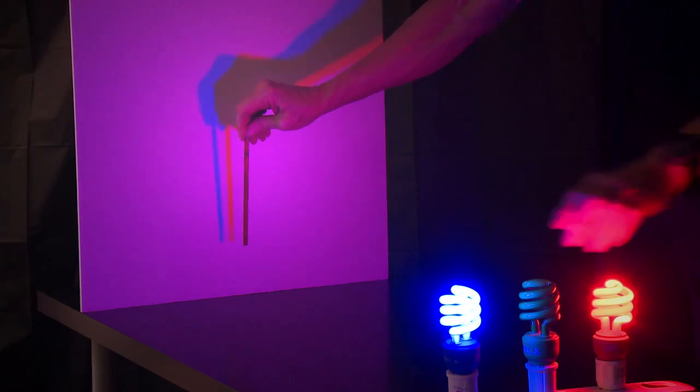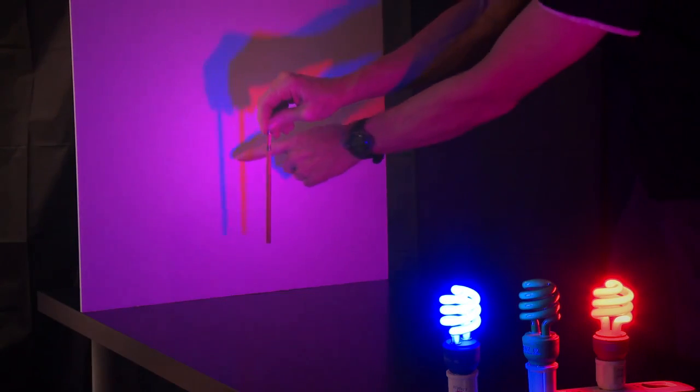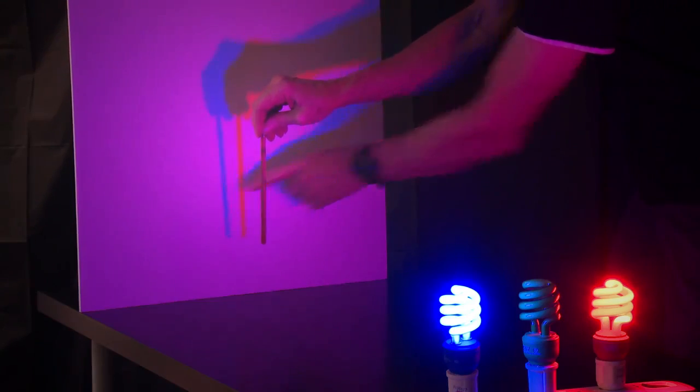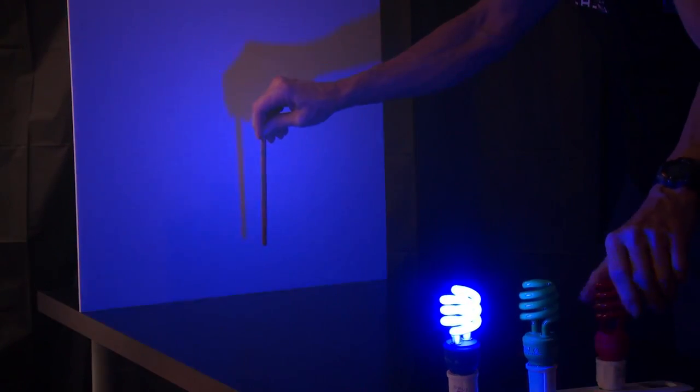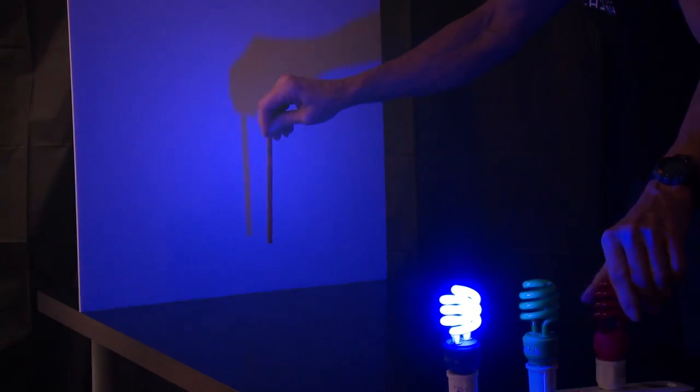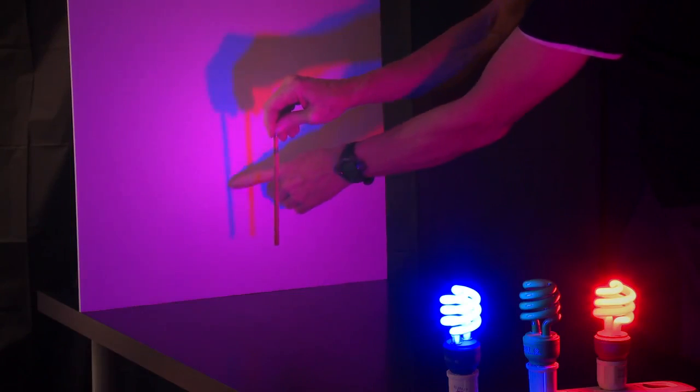The light from the red light goes in a straight line and it makes a shadow here. Watch that shadow as I turn the red light on and off. So this is the shadow of the red light.